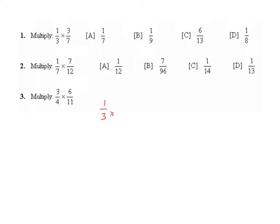Question 1 is 1/3 times 3/7. When we multiply fractions, we multiply the numerators together and multiply the denominators together. So we have 1 times 3 is 3, and 3 times 7 is 21. This can be simplified by dividing by 3/3 because 3 is a common factor of 3 and 21. That gives us 1/7.